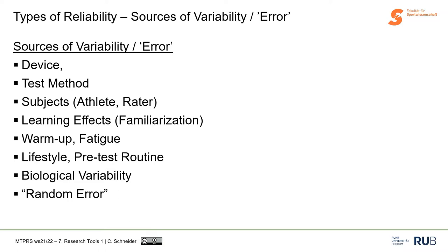We could also consider different test methods — for example, a countermovement jump with hands on hips versus a jump-and-reach test. Different subjects or different athletes are a source of variability, as are different levels of expertise. Learning effects and familiarization can introduce error we don't want. Warm-up before the test, fatigue during tests, surrounding conditions, lifestyle, pre-test routines, and biological variability such as circadian rhythm can all impact reliability.